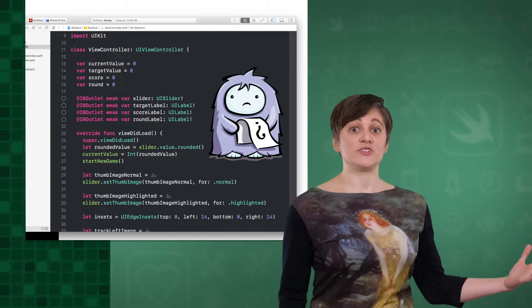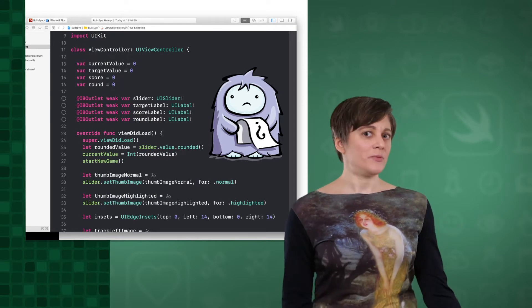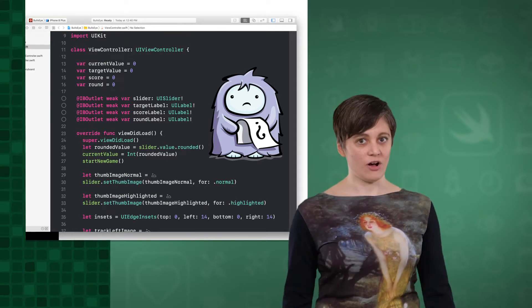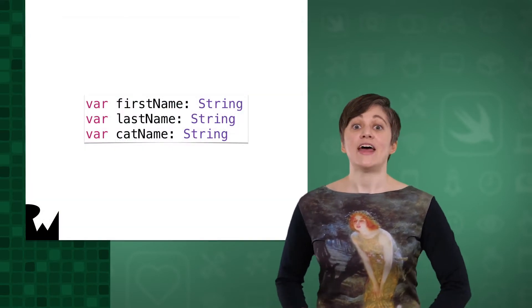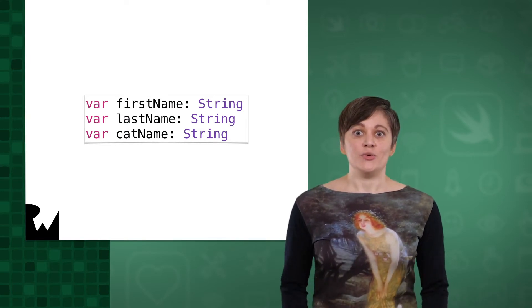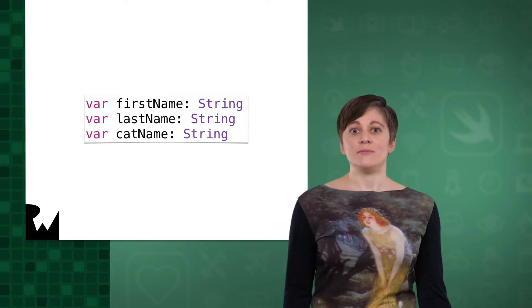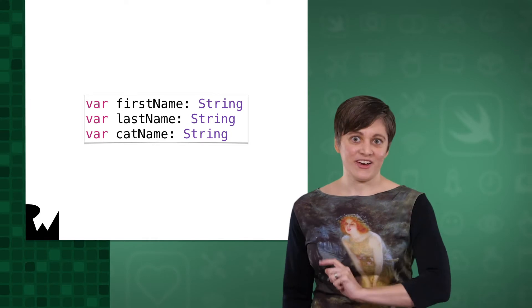To explain what optionals are and why they're helpful, let's think about a common problem a programmer might come across. Let's say you're making an app that keeps track of your friends. You want to store their first name and their last name, and if they have one, the name of their cat.